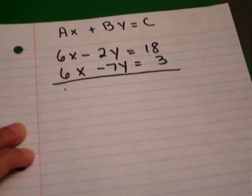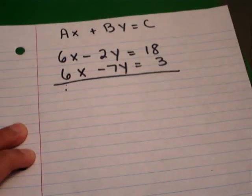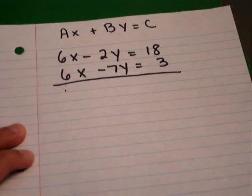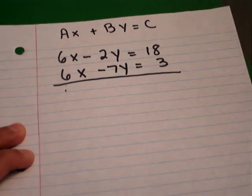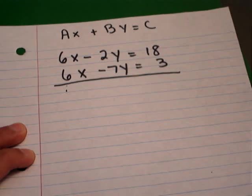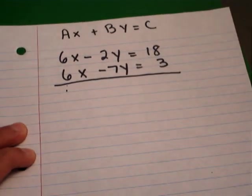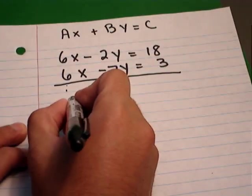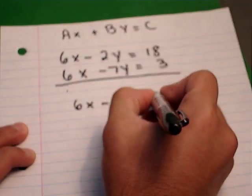From the looks of it, the y is a little bit harder to cancel out because the numbers are different, but the x is pretty easy — you have the same numbers, 6 and 6. The only problem is that you need to make one of them negative. So if you remember from the first video, you need to multiply one of the equations by negative 1, and that would switch the signs on all of them. I'm going to choose the bottom equation to switch the signs, so I'm going to rewrite the top equation: 6x minus 2y is equal to 18.